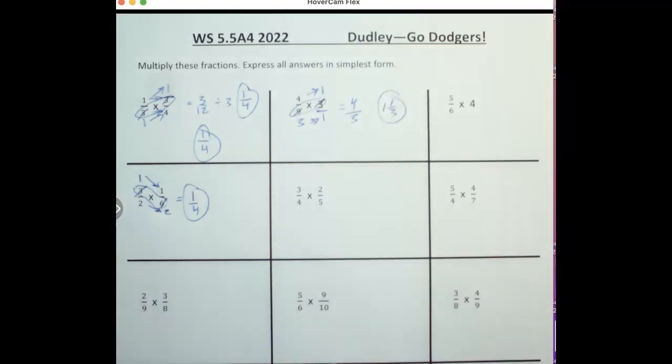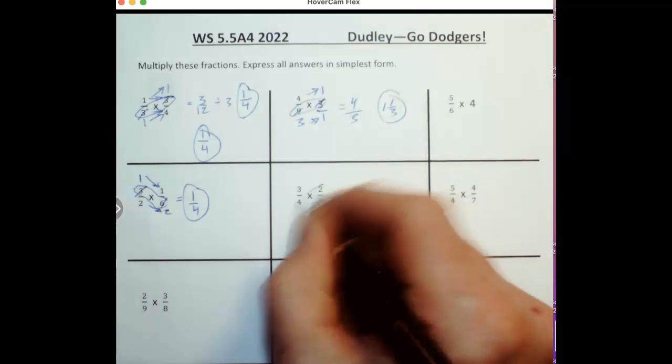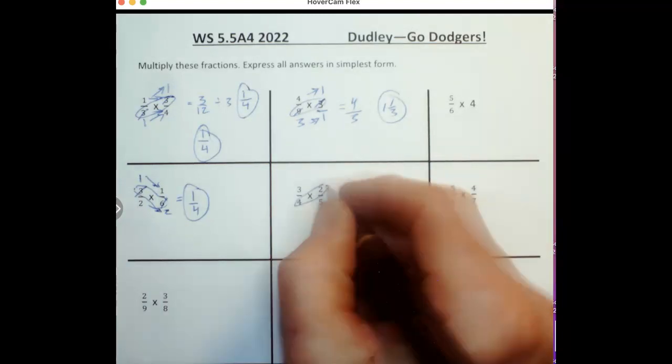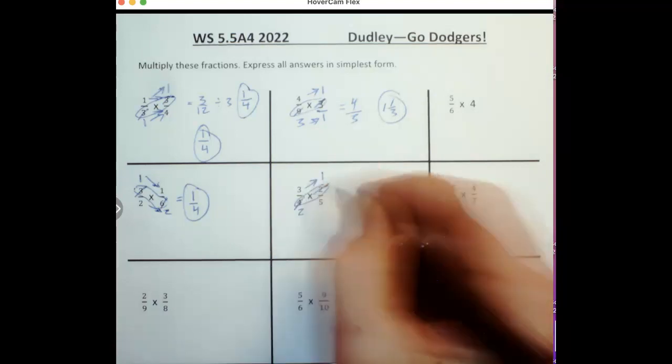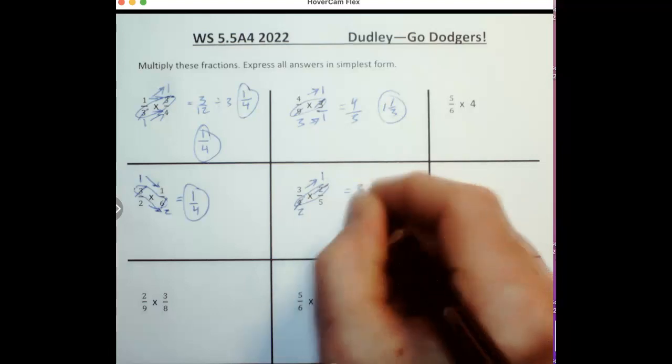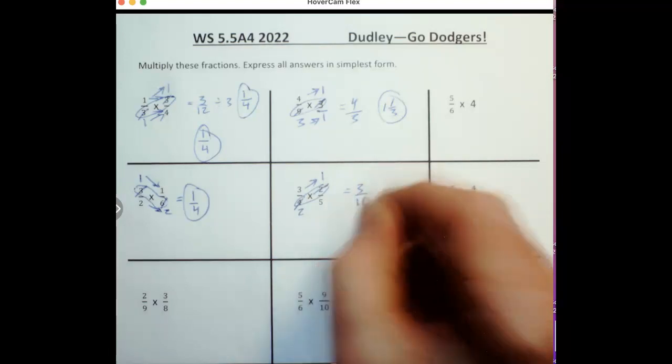Do another one here. We can cross-reduce here. We can divide both these by 2. 2 divided by 2 is 1, 4 divided by 2 is 2. I can multiply this way. 3 times 1 is 3, 2 times 5 is 10, 3 tenths.